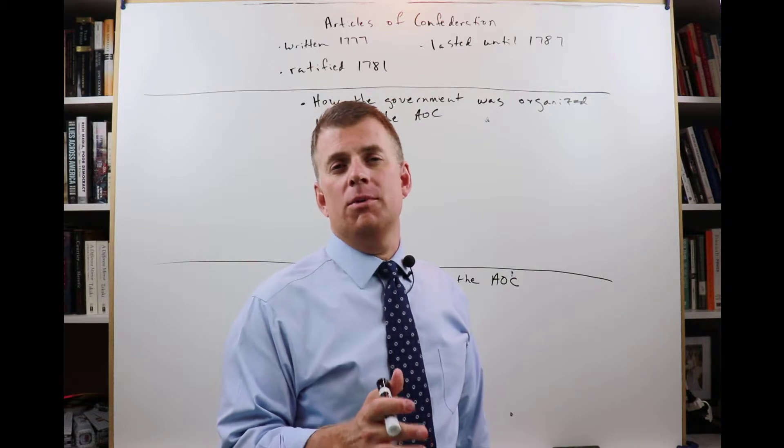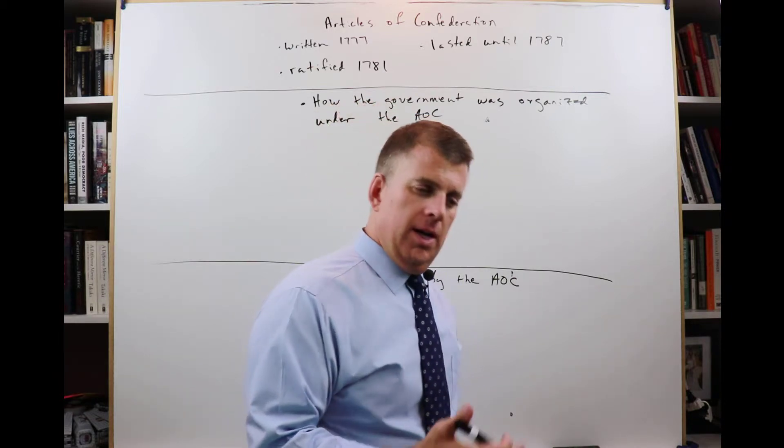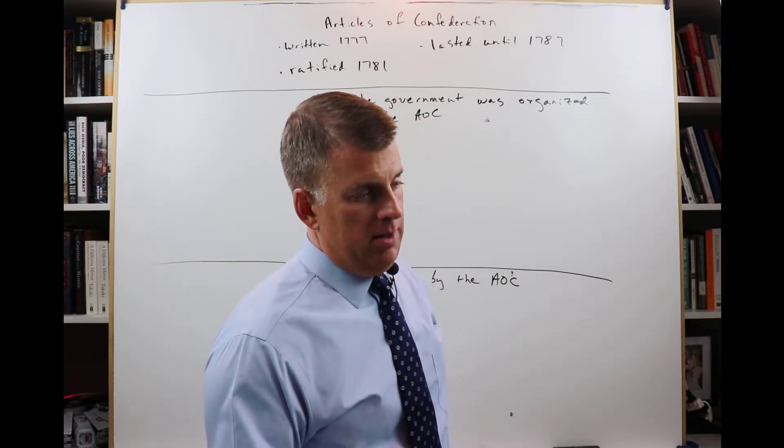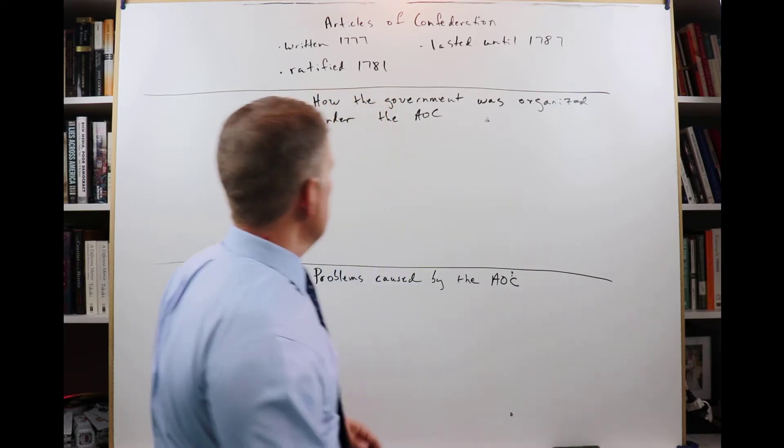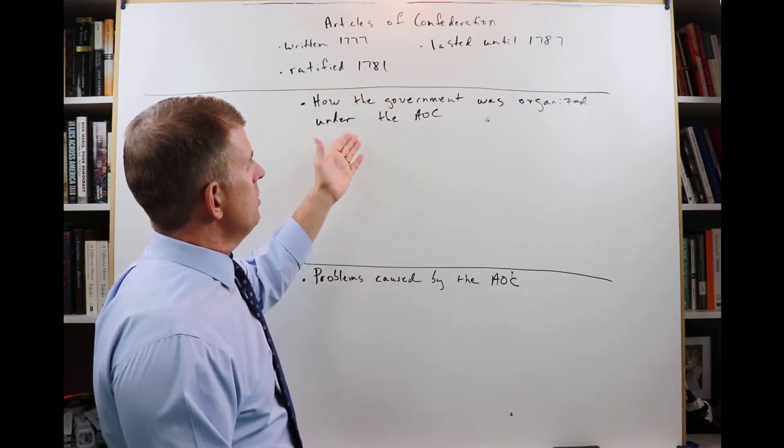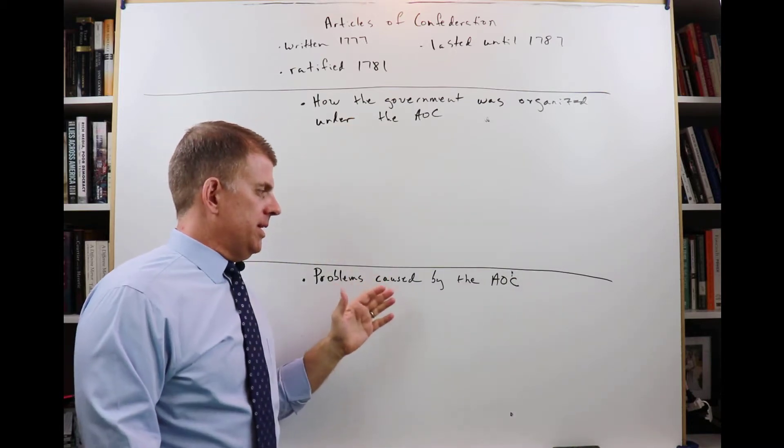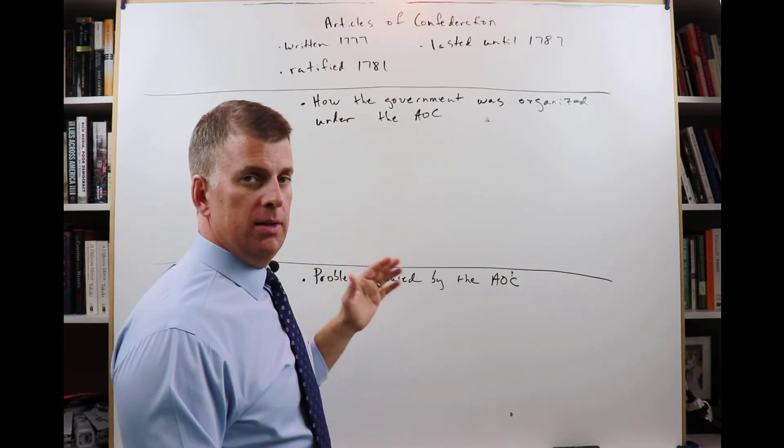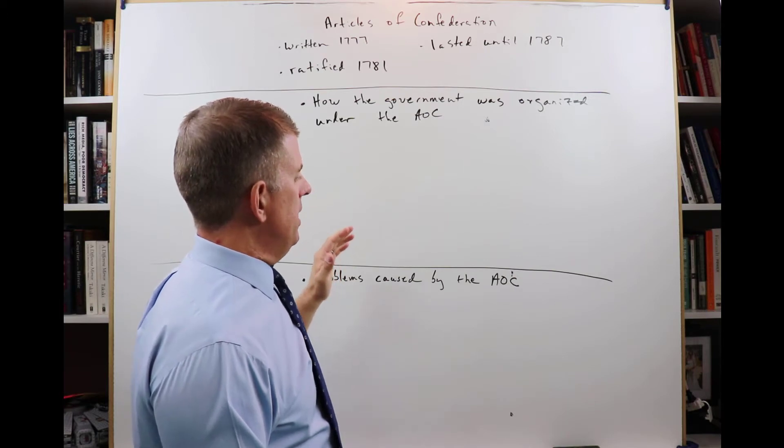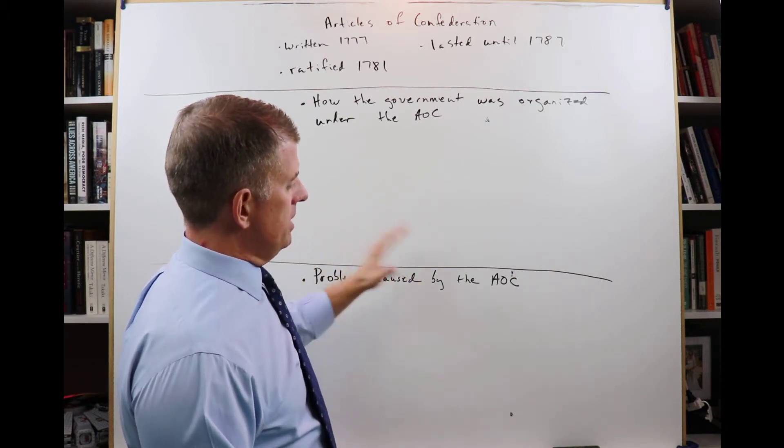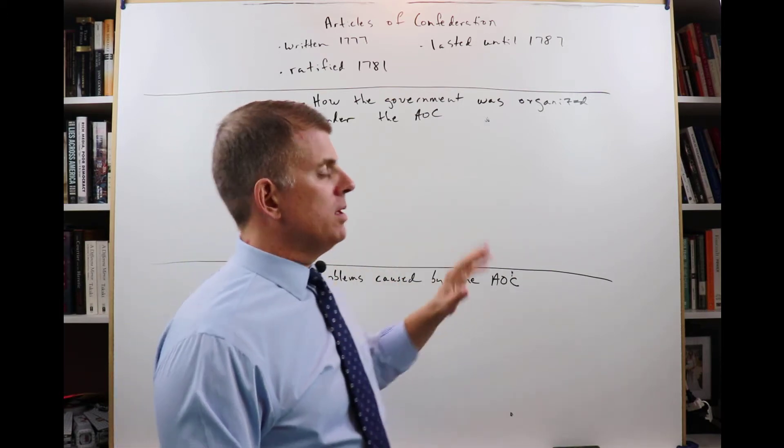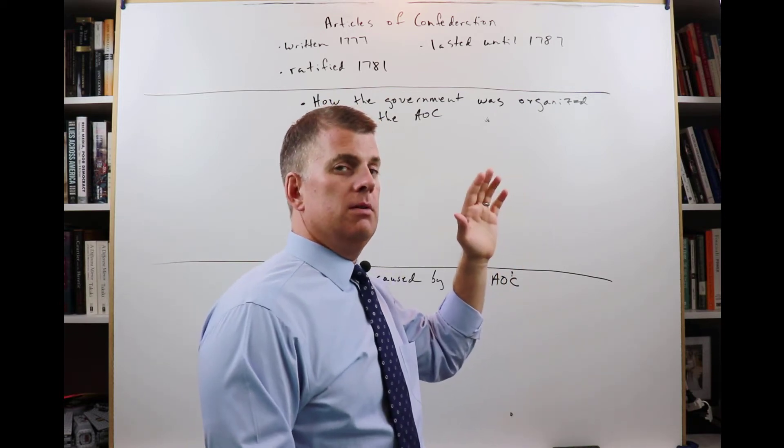While it was born from experience, it was pretty bad and caused a lot of problems. We're going to look at how the government was organized under the Articles of Confederation and the problems caused by them. All of these things are going to lead up to the Constitution in 1787.